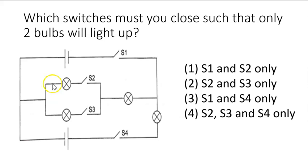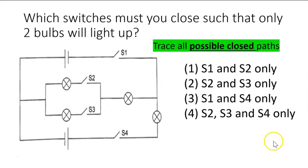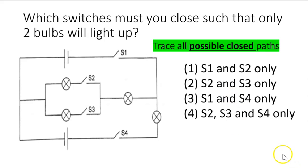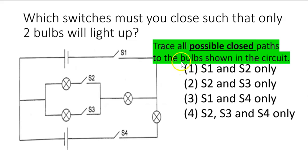Now let's look at this question. Which switches must you close such that only two bulbs will light up? For this question I'm given four options. I will use guess and check to determine which option is correct. For each option I will trace all possible closed paths to the bulbs shown in the circuit. In this circuit there are four bulbs: one, two, three, four.